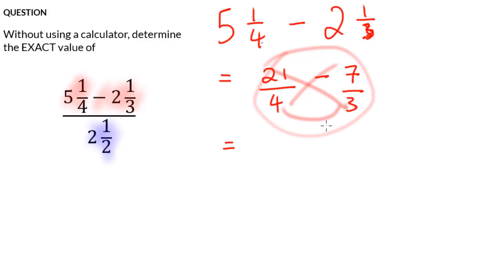So it's going to be four times three, which is 12 and 21 times three up at the top. 21 times three is 63. So that's going to be 63 minus four times seven and four times seven is 28.